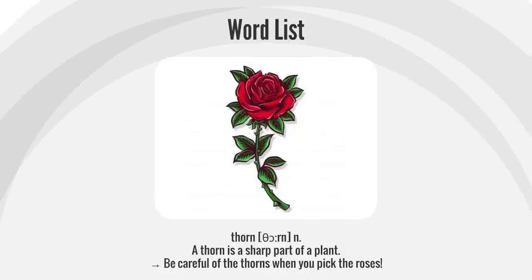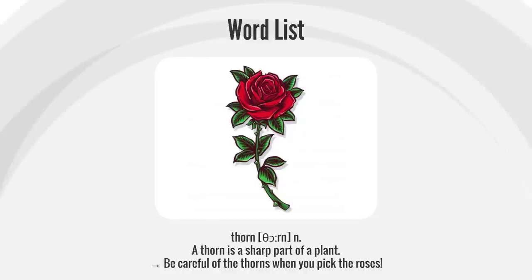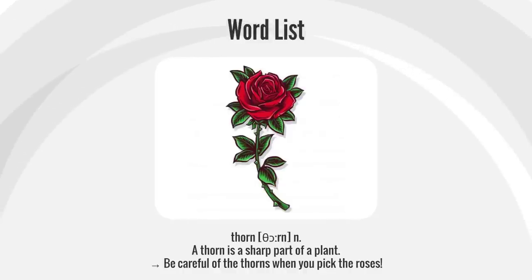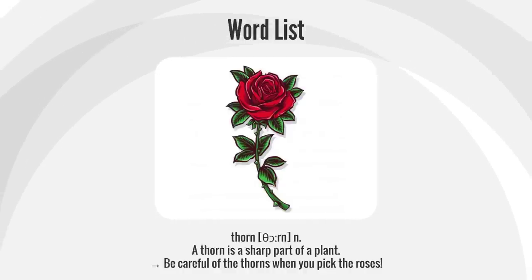Thorn. A thorn is a sharp part of a plant. Be careful of the thorns when you pick the roses.